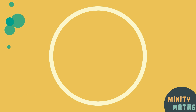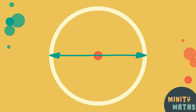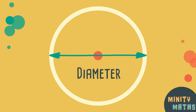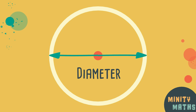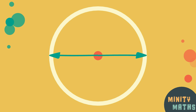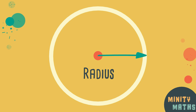So let's look at the names of the different parts of a circle. First up we have the diameter. This is the distance across the whole width of the circle and must pass through the center. Secondly, the radius is the distance from the center to the edge of the circle. This is half of the diameter.